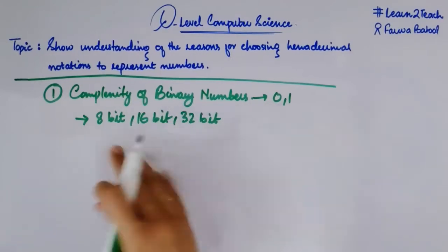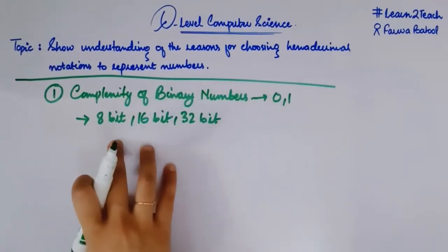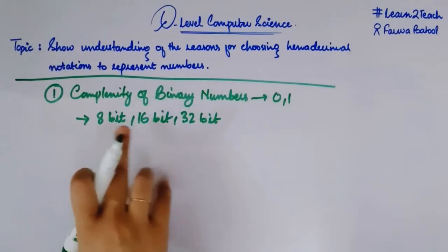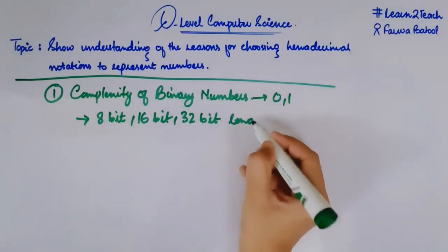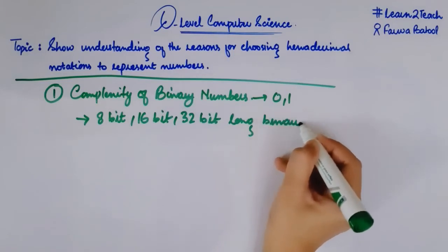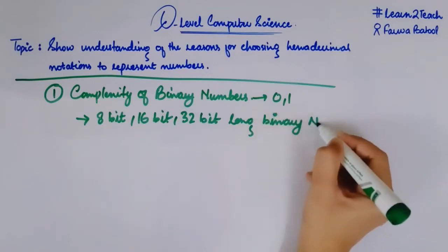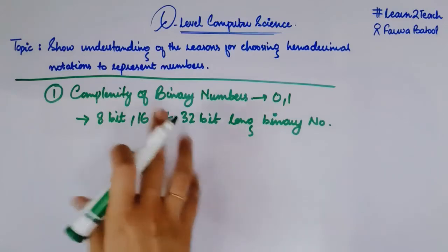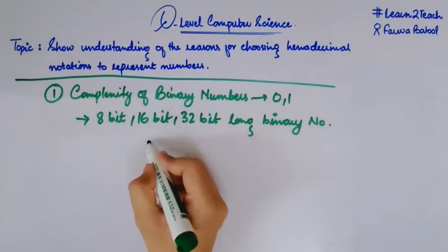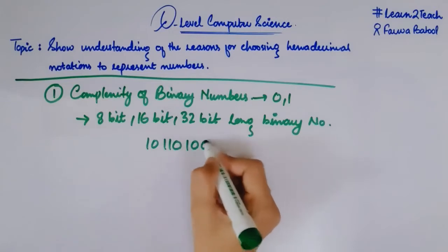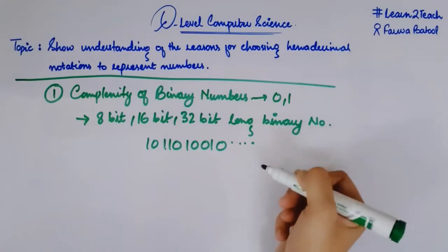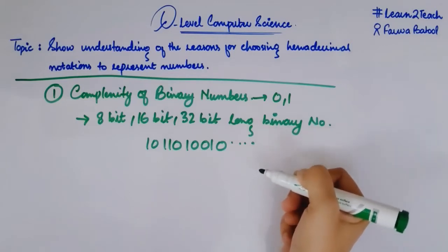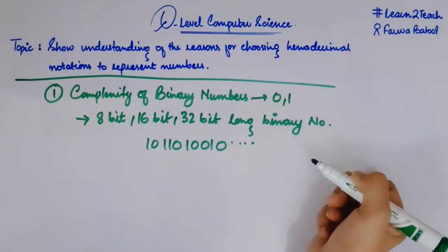Since we know that binary numbers are stored in the form of bytes, they can be 8-bit, 16-bit, or 32-bit long binary numbers. So when we are dealing with such long binary numbers — like a 32-bit binary number: 1, 0, 1, 1, 0, 1, 0, 0, 1, 0, 1, and so on — and when we are doing calculations with such big binary numbers, can you imagine how difficult it would be?